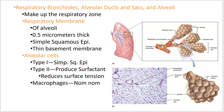Think about it like this: respiratory bronchioles have small alveoli blebbing off of them, so you can get gas exchange in the respiratory bronchiole. Then you lead to the alveolar duct, which is a tube running into the alveolar sac. The alveolar sac is the whole cluster — the analogy is the sac is a bunch of grapes and the alveolus is a single grape. Alveolus is singular, alveoli is plural.